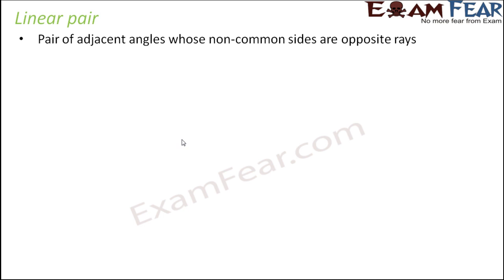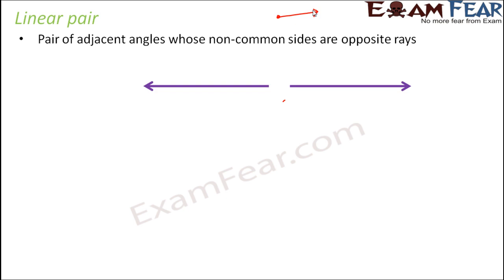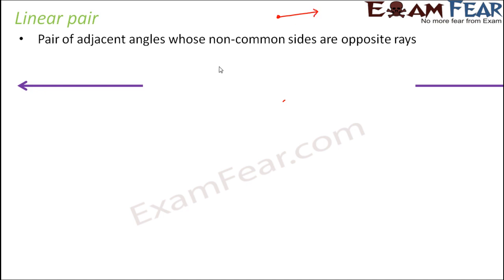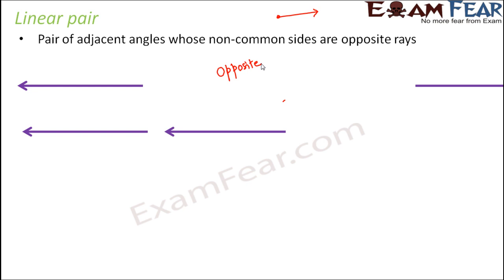A linear pair is a pair of adjacent angles whose non-common sides are opposite rays. By now you already know what adjacent angles are. A ray is that part of a line which extends only in one direction — one side is fixed while the other extends infinitely. Opposite rays are two rays extending in exactly opposite directions, whereas rays extending in the same direction are non-opposite rays.